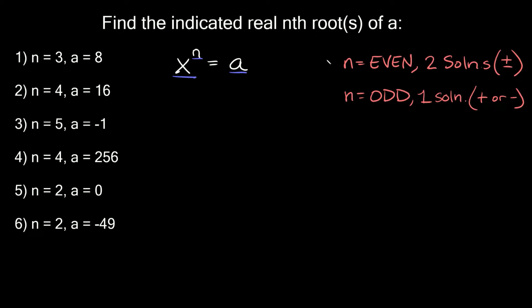One tip about the exponents: if your exponent n is an even number, then we're going to have two solutions or two roots — a positive one and a negative one. And if your n is an odd number, then we have one solution, and it's going to be either positive or negative.